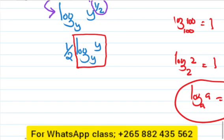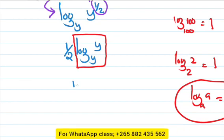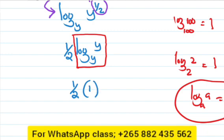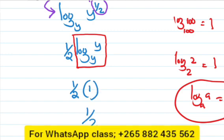So above, log answer is 1. So it's like a half multiplied by 1. So 1 times half, answer is a half.